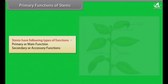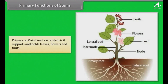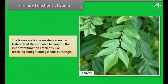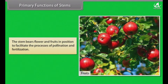Stems have primary and secondary functions. The primary functions of stem are: it supports and holds leaves, flowers and fruits; it conducts water and minerals from the roots to leaves, flowers and fruits; the leaves are borne on the stem in such a fashion that they efficiently receive sunlight and carry on gaseous exchange; and the stem bears flowers and fruits in position to facilitate pollination and fertilization.